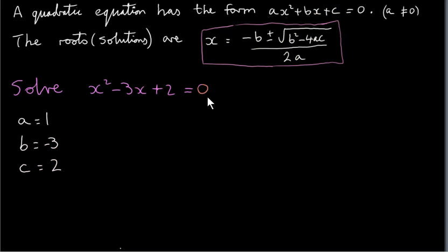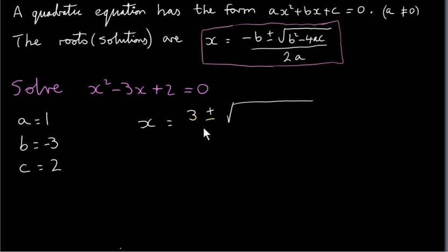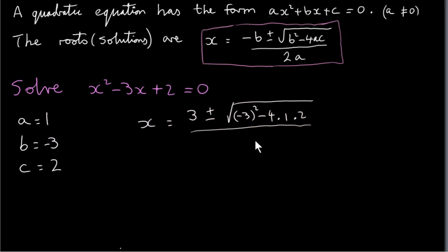So we fill those three numbers into our formula. x equals minus b, so we have minus minus 3, that's plus 3, plus or minus the square root of b squared — minus 3 squared — minus 4 times a, which is 1, times c, which is 2. And this is all divided by 2 times 1.